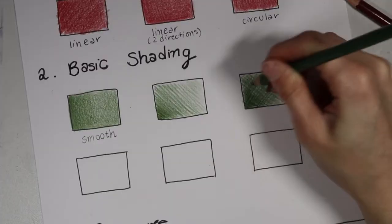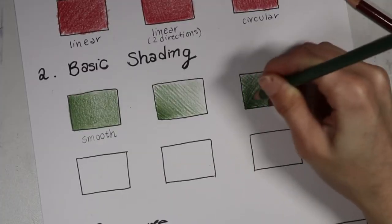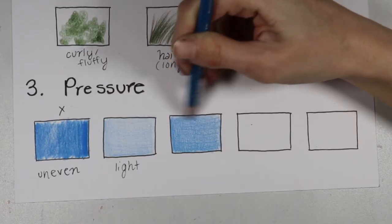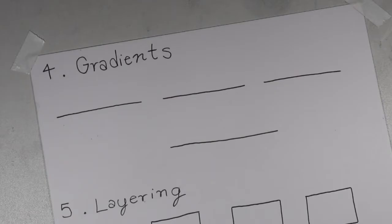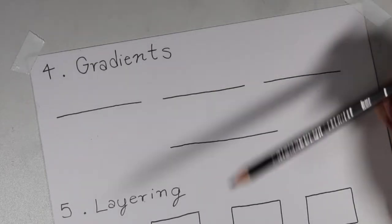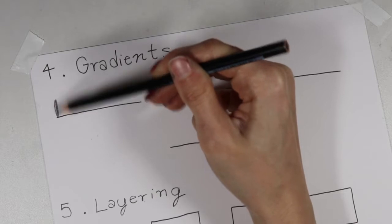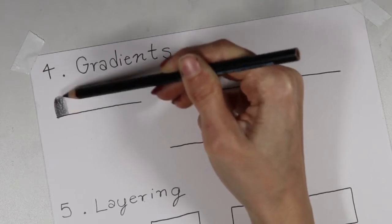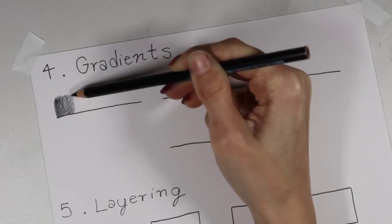In this video I'm going to talk about gradients, layering, and blending, which go hand in hand with the things I talked about in the first video. I'm going to get started with gradients. Let's start out with a black pencil because that's easiest and we're going to go from a very dark value to a mid-tone to then a light value or a highlight.